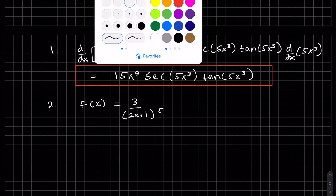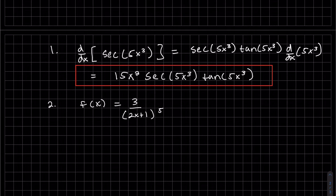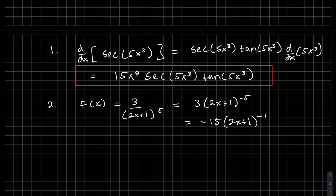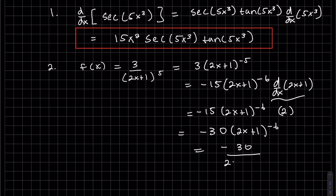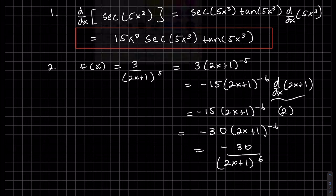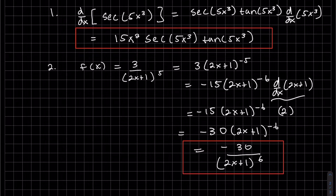Before I take the derivative of this, I do want to rewrite it. I'm going to write it as a power, not a quotient — so it's a negative power. Then I apply the power rule on the outside: this times this, subtract 1, and then the derivative of the inside, which is just 2. Then combine, and if you like you can write it as a positive power since we started off as positive.